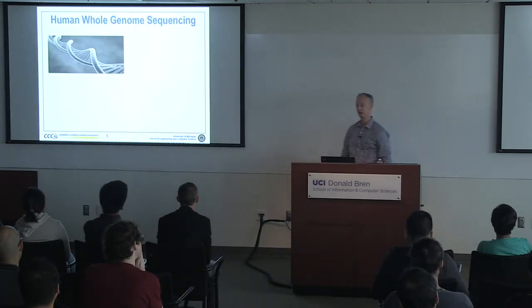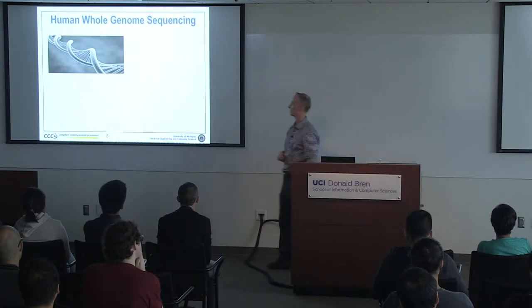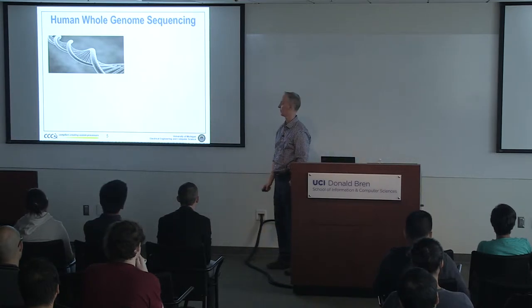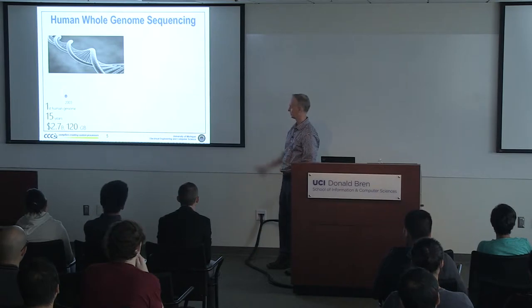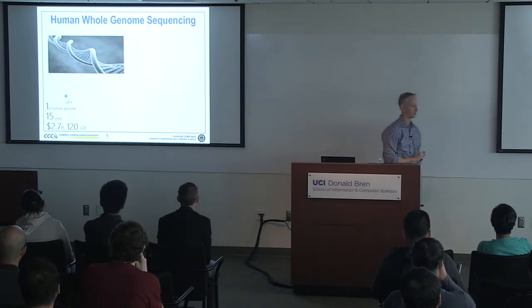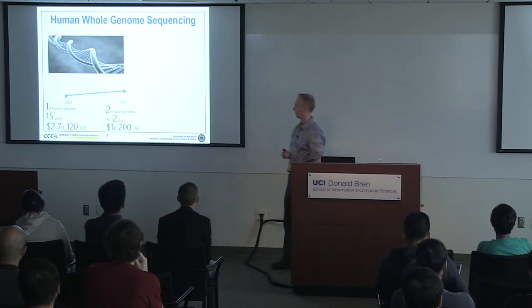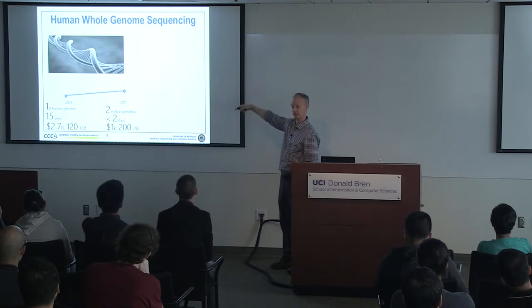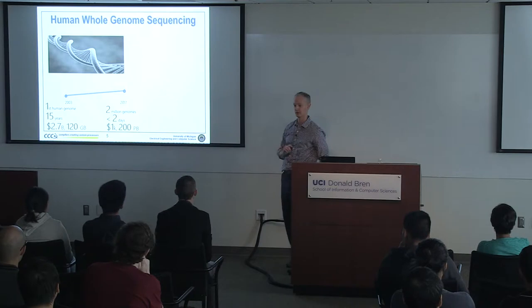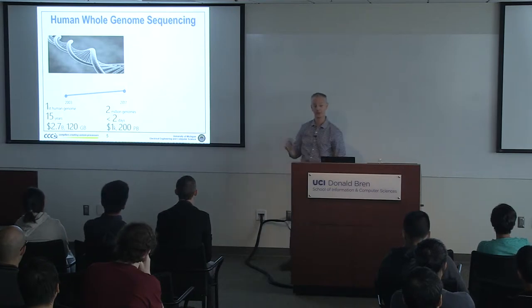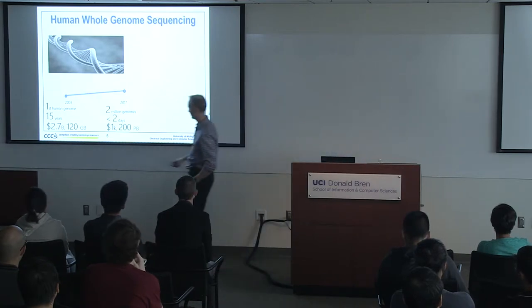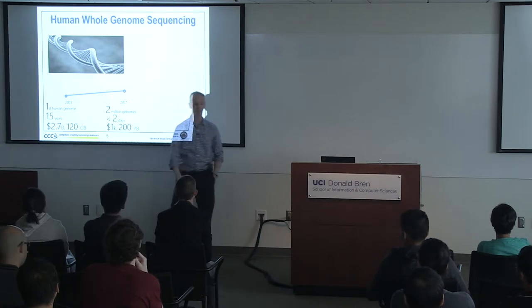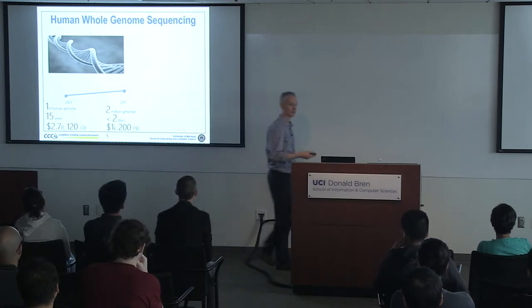Another area where data generation will be astronomical is whole genome sequencing. The first human genome was sequenced in 2003, costing about 2.7 billion dollars. Fast forward to today: about 2 million genomes will be sequenced this year, the time has come down to a small number of days, and cost has dropped from billions to thousands of dollars. Currently about 200 petabytes of human genome data are being generated.